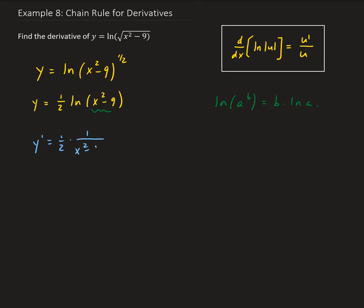So we have 1 over x squared minus 9 times the derivative of x squared minus 9 with respect to x.